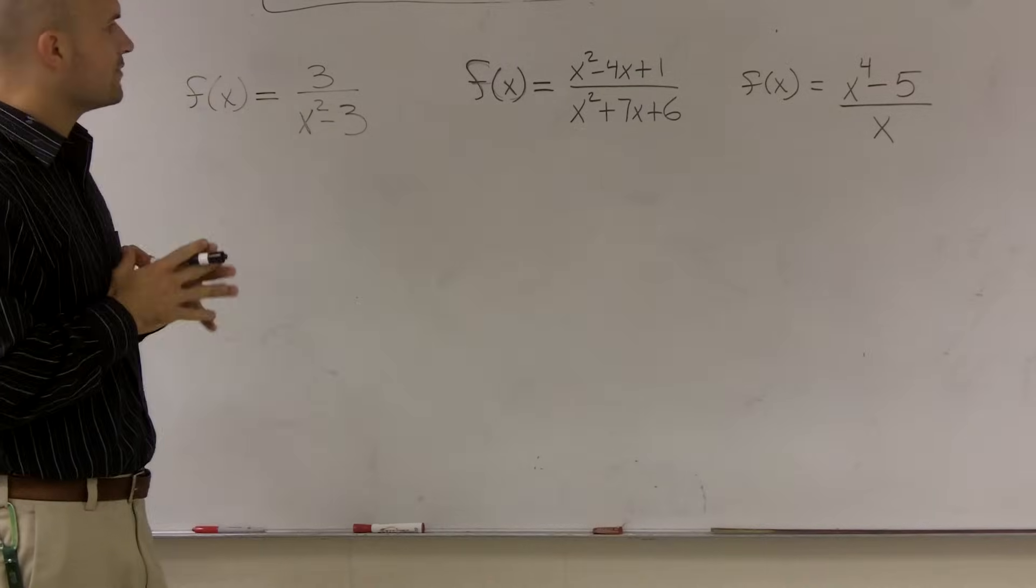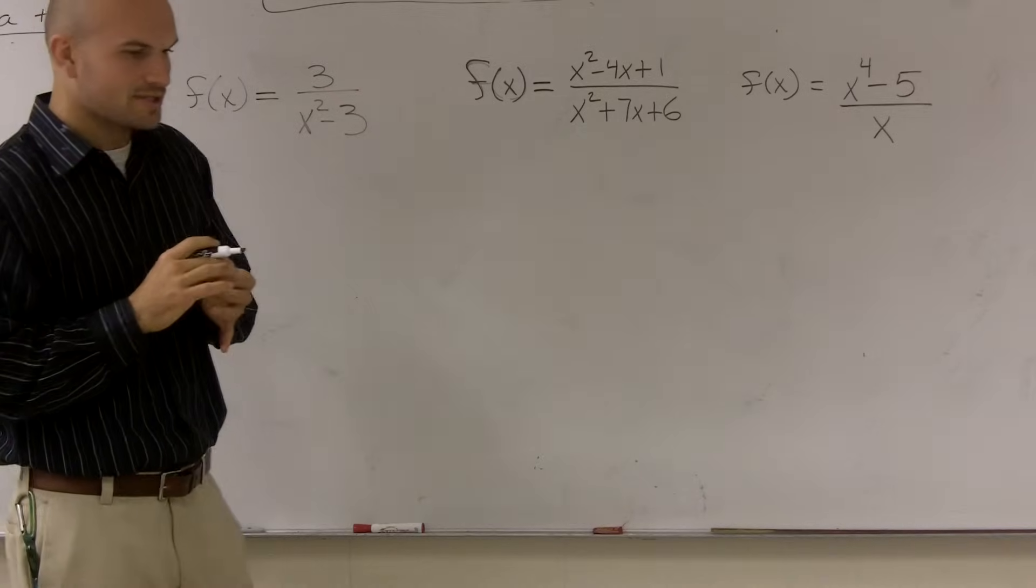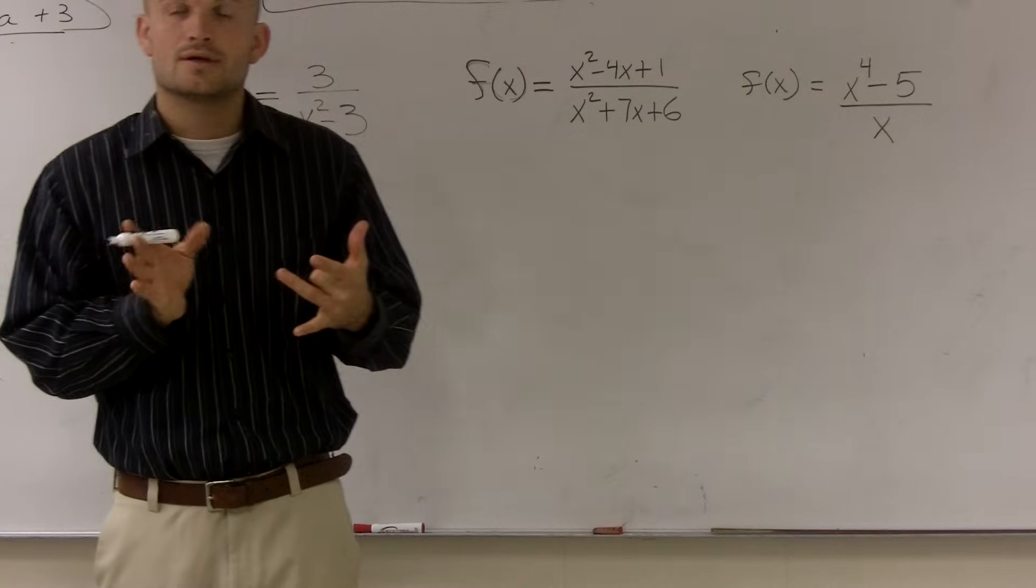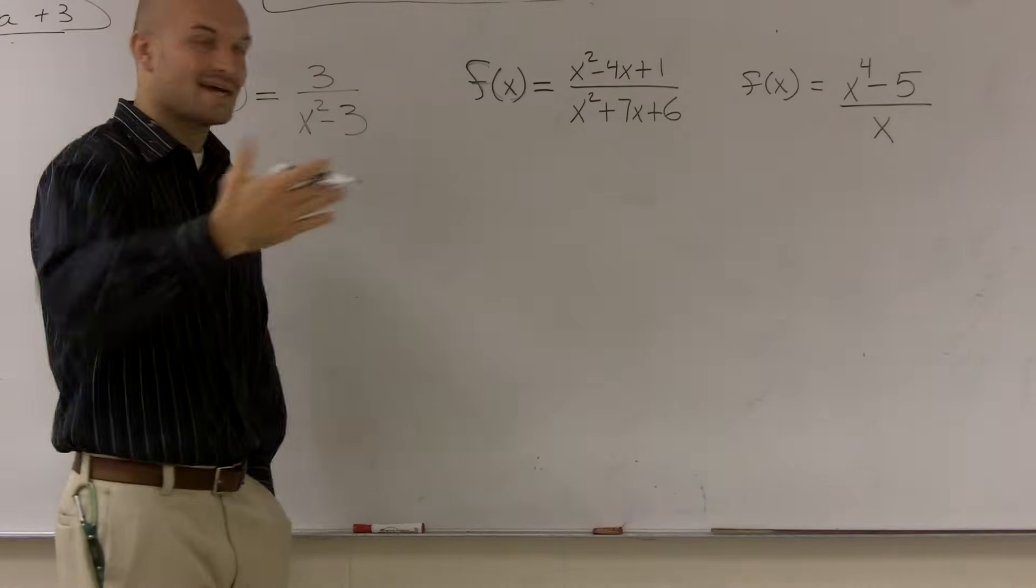So the first thing we want to do when we're finding our vertical asymptote - our vertical asymptote is going to tell us what values of our function are not going to cross on the x-axis.